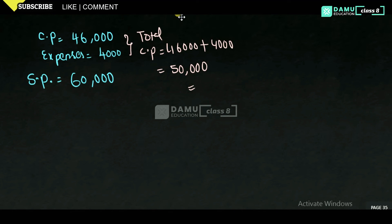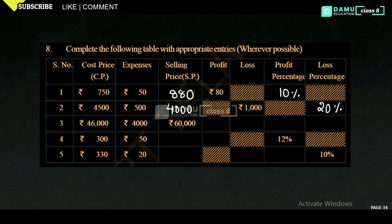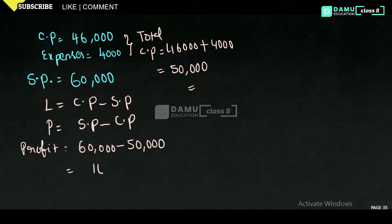We have to find loss, profit, and loss or profit percentage. Total cost price will be 46,000 plus 4000 equals 50,000. Profit equals selling price minus cost price, so profit equals 60,000 minus 50,000, which gives profit equal to 10,000 rupees.